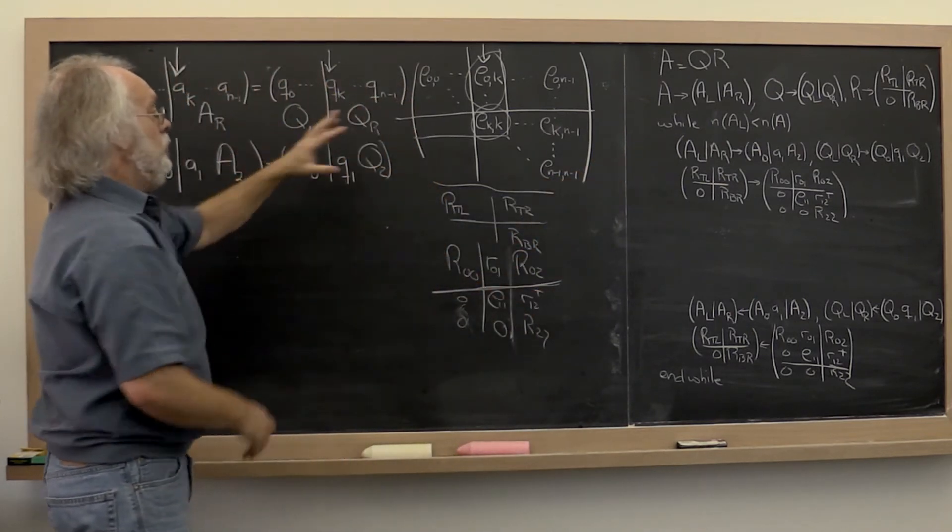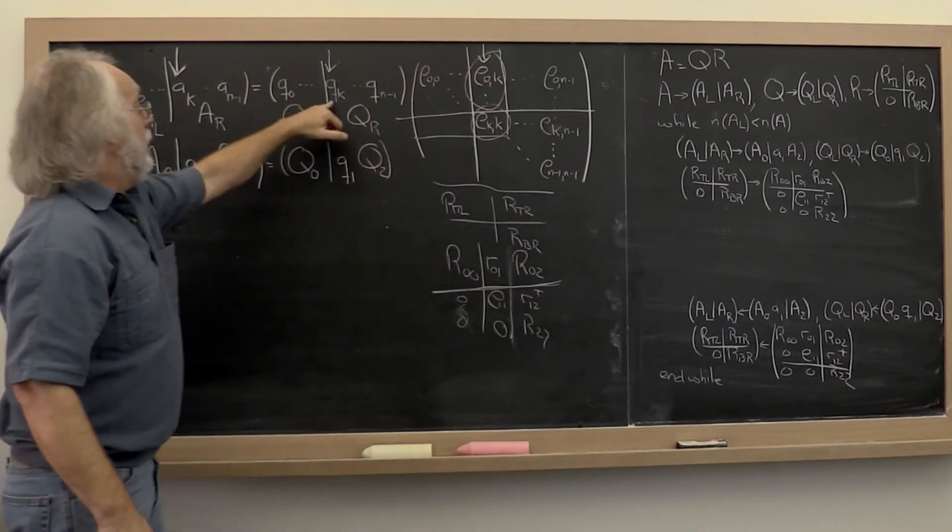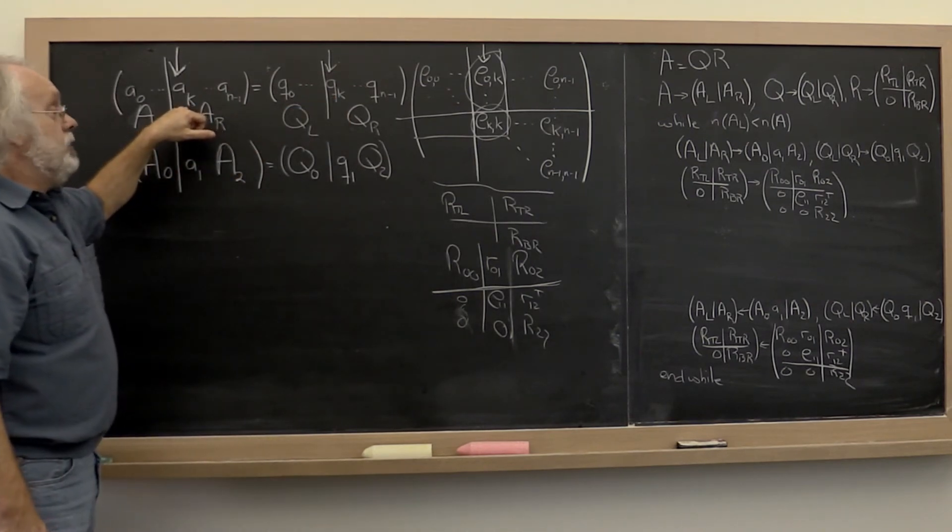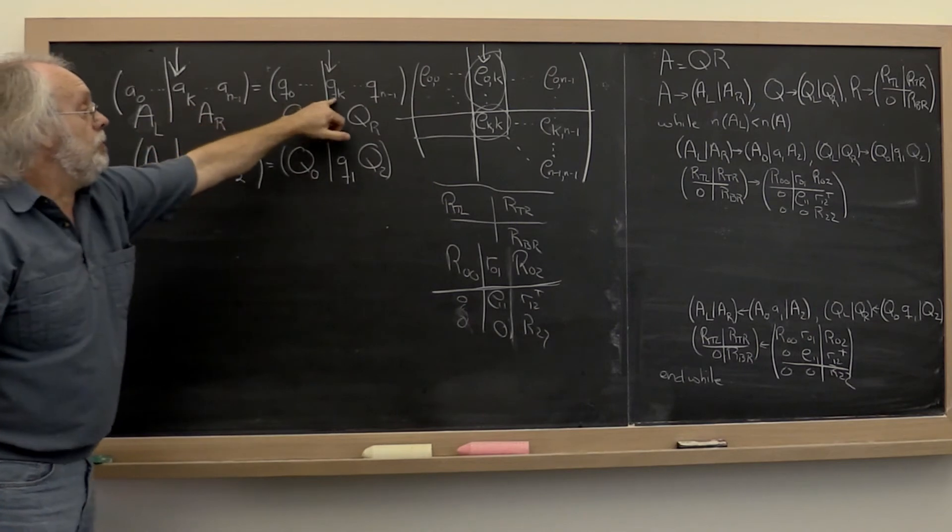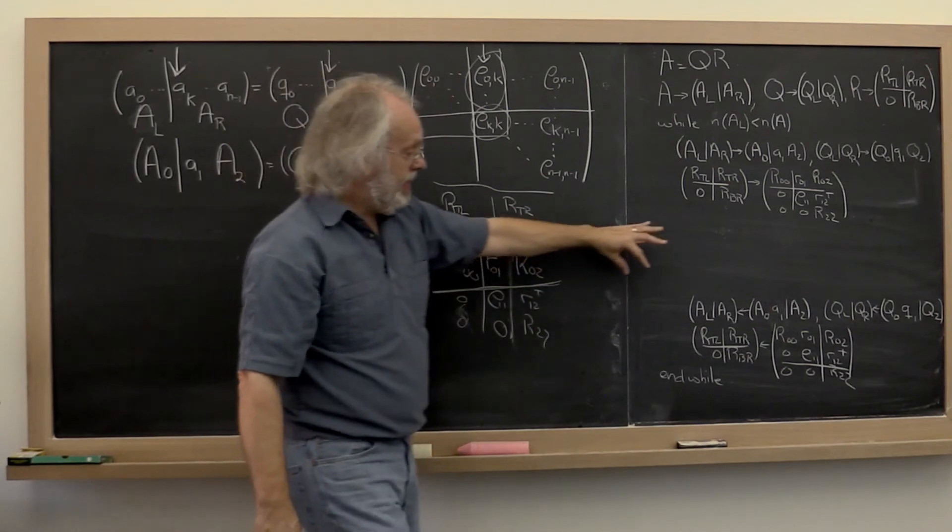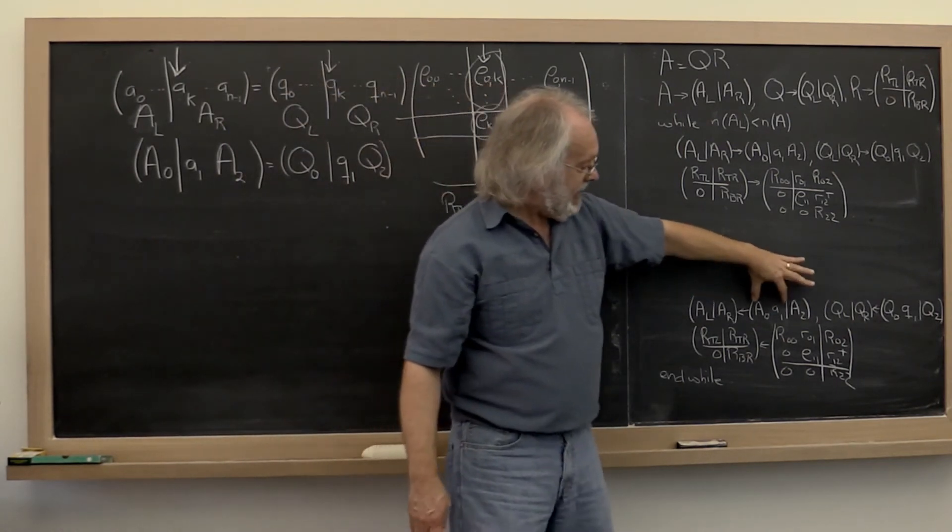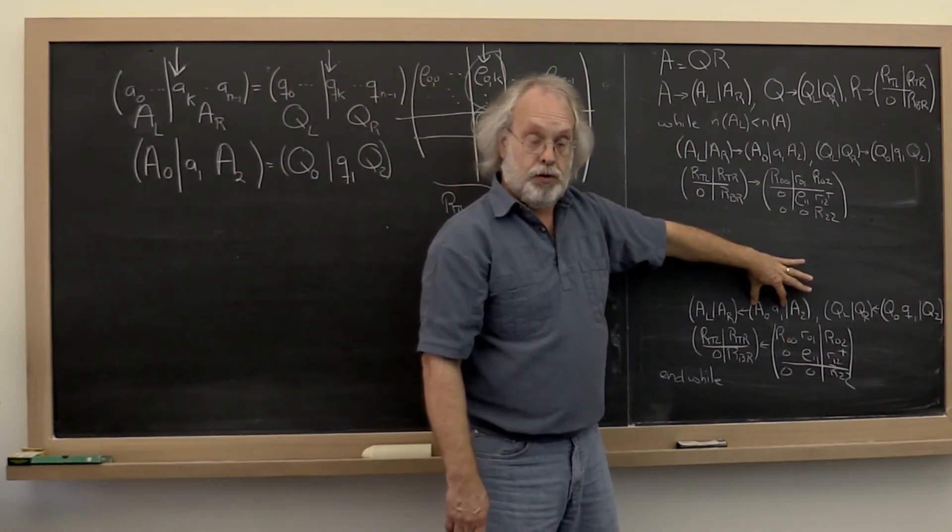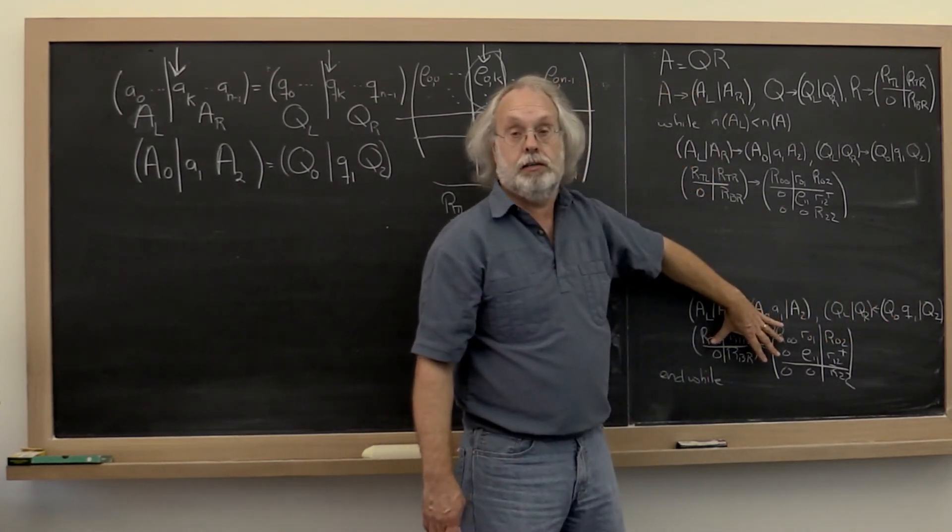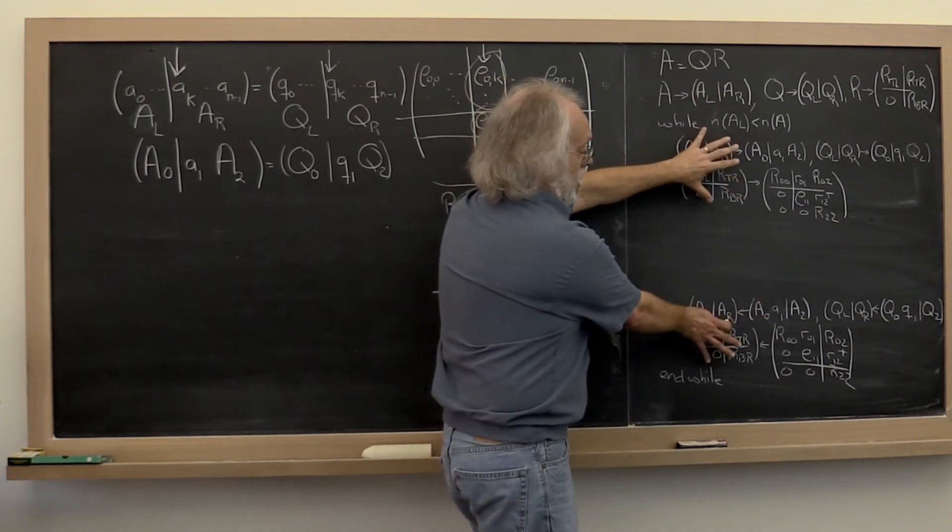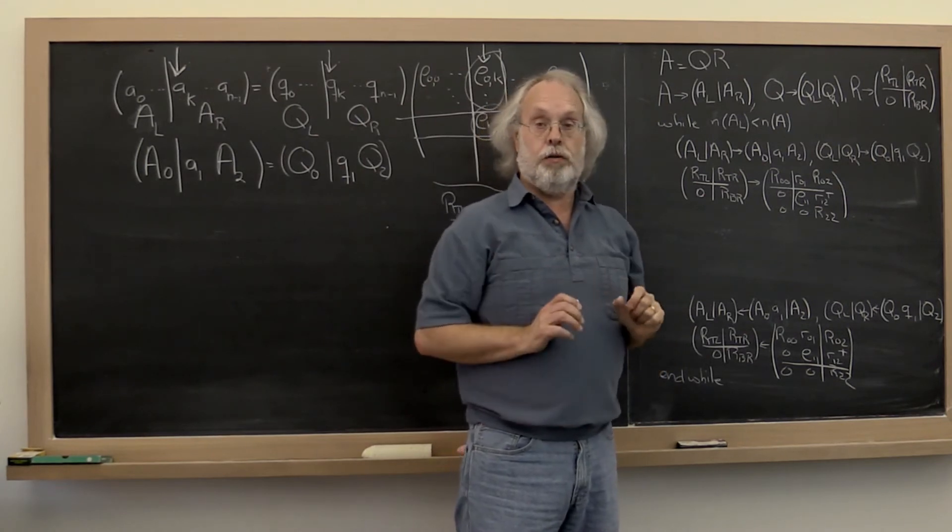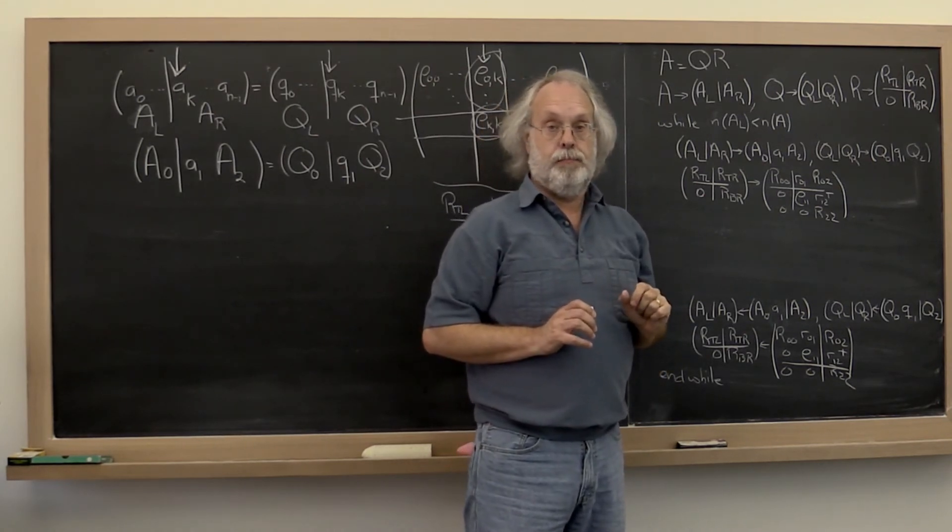Now once we have computed these entries and that entry of Q and we've processed this column of Q, that column of Q and this column of A, then we can move forward. Then our left part of A includes that column that we have just processed. And the same thing for Q and the same thing for R. So this is really a way of indexing into the various matrices without exposing all of the individual entries.